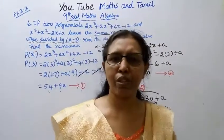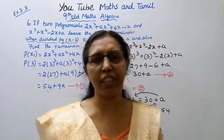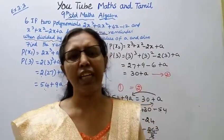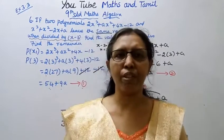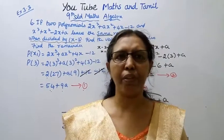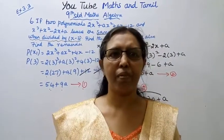a equals minus 3 and the remainder equals 27. This channel helps you to get 100 marks. Please subscribe to the channel and click the bell button.